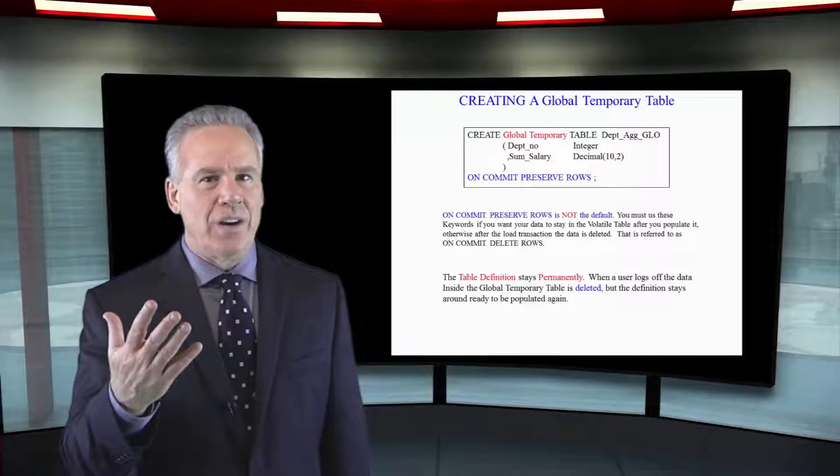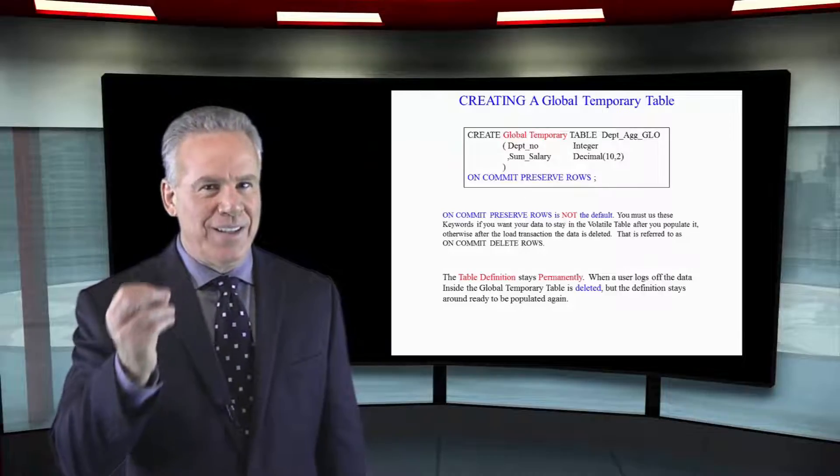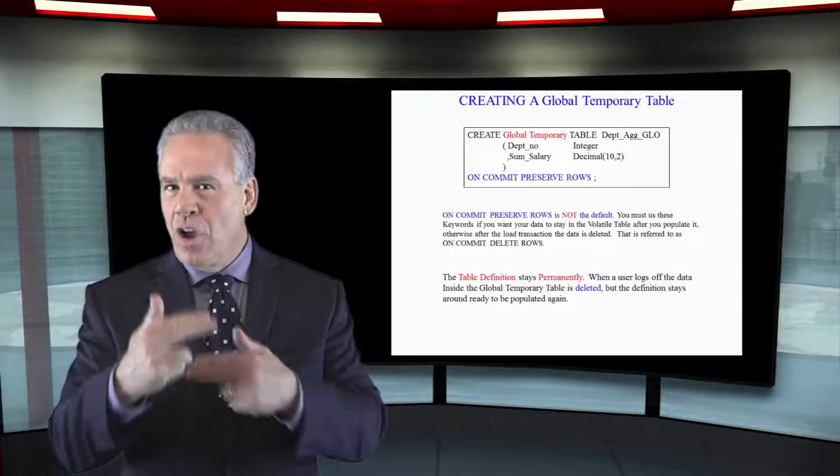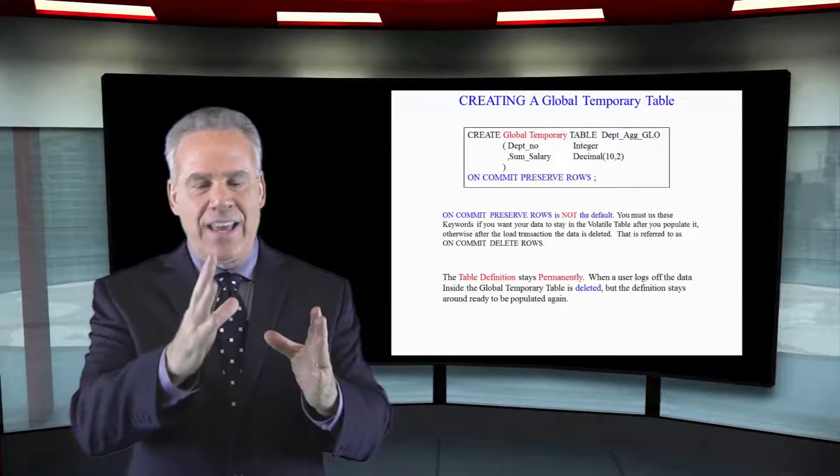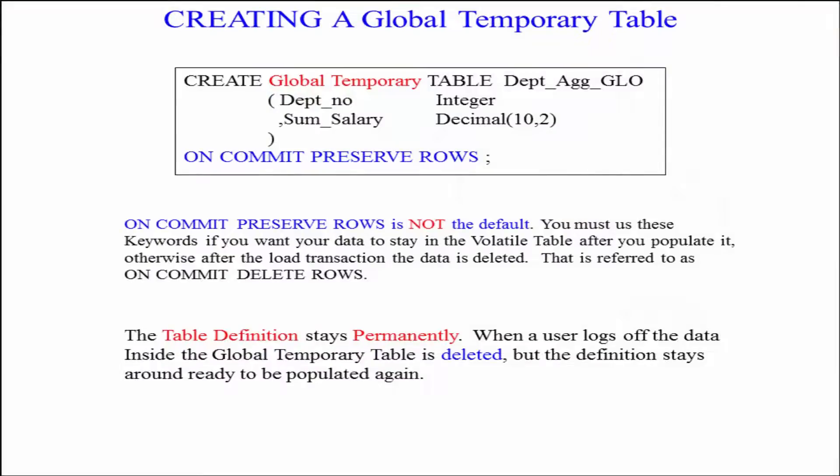I've got two options there I could have the on commit delete rows and this is often used when you're having an ETL and having that global temporary table as an intermediate table. But I've got the on commit preserve rows to say keep the rows out there permanently.